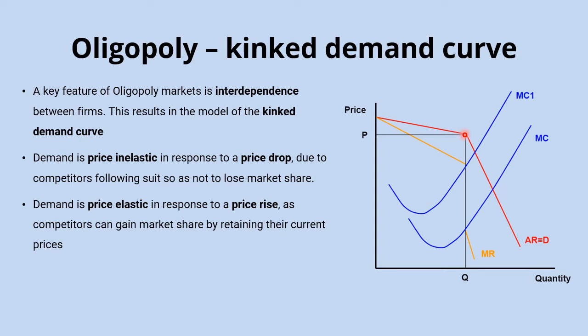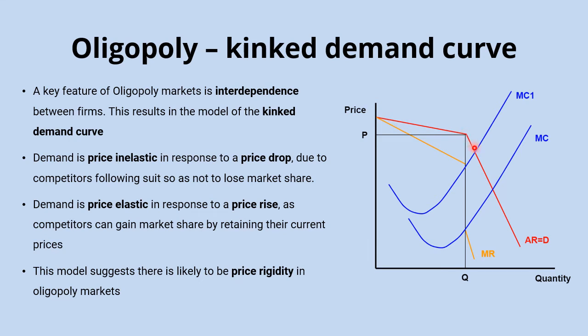The really important outcome of this model is price rigidity — prices don't change very much or very often in oligopoly markets. The average revenue curve kinks around the price point, and the marginal revenue curve is twice as steep as the average revenue curve. When the average revenue curve kinks, the marginal revenue curve goes vertical and then continues at a steeper slope further down.